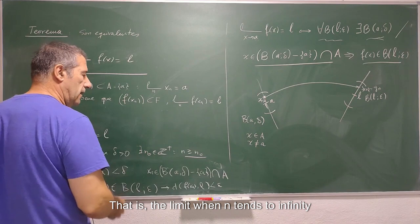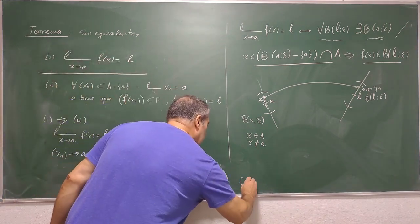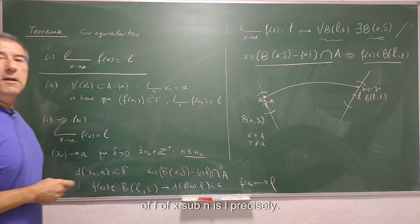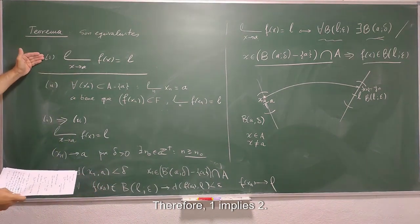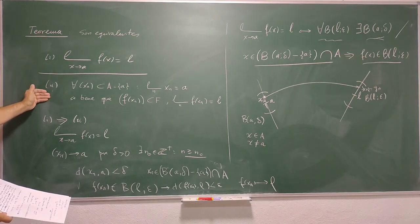As long as n is greater than or equal to n sub 0. That is, the limit when n tends to infinity of f of x sub n is L precisely. Therefore, 1 implies 2. Okay?